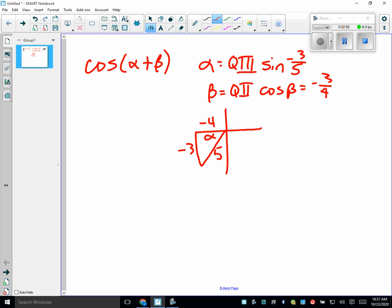Beta is in quadrant 2. Now when I draw these triangles, you notice I'm marking which one is alpha and which one is beta. What do I know about beta? What's my adjacent side? What else do I know? The other side is not 5. It is radical 7, and it is positive because it is going up.